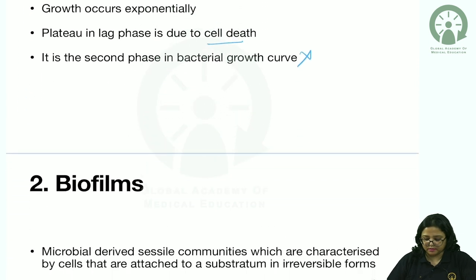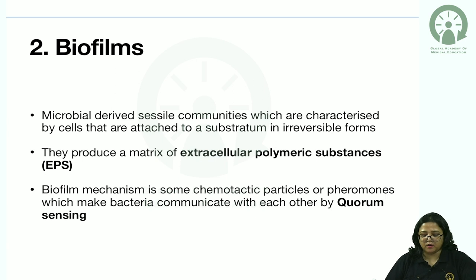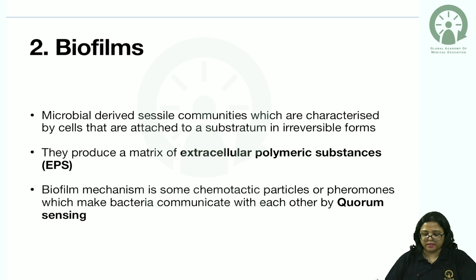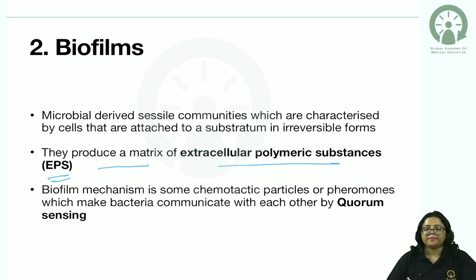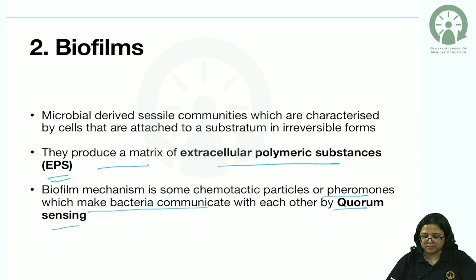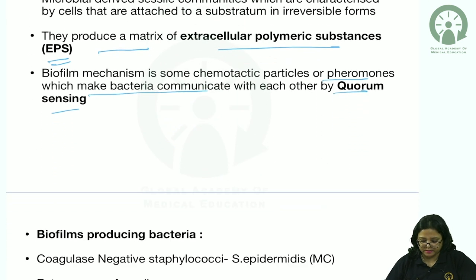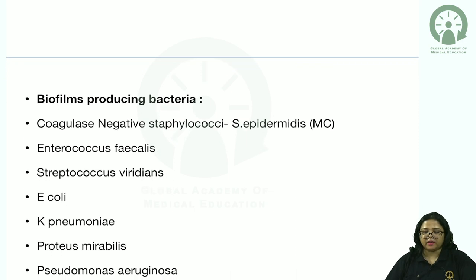Biofilms have assumed clinical importance, especially in patients on a central line or intravenous catheter. Certain bacteria produce a matrix of extracellular polymeric substances. These are communities where bacteria accumulate and communicate with each other by pheromones, which is known as quorum sensing. Two important terminologies: matrix of extracellular polymeric substance and quorum sensing.